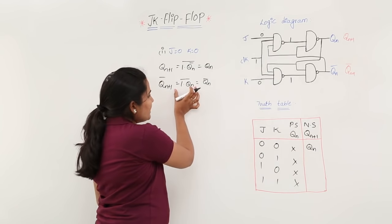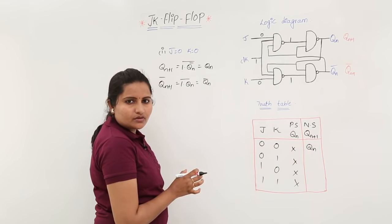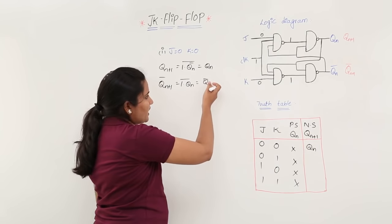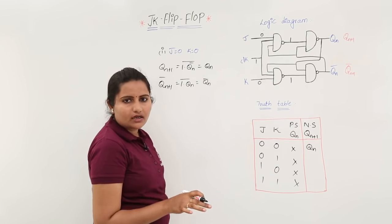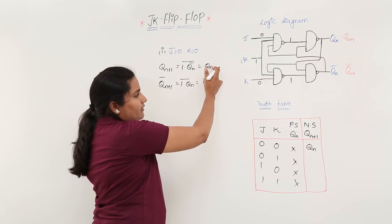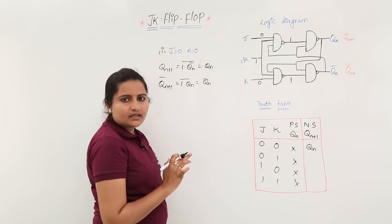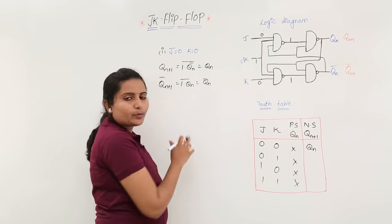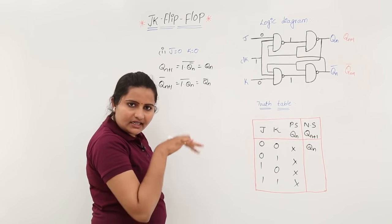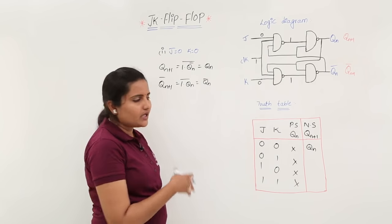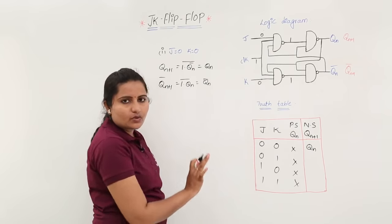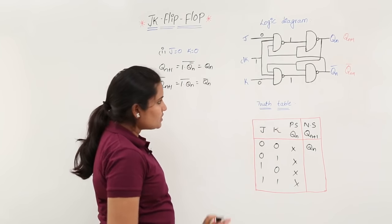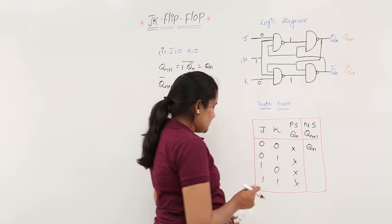We derived this to check whether we are getting any value in the complement port or not. When you are not getting a value of 0 or 1 at the normal port, you need to check the complement port for a value. Even if you are not getting a value there, you can write as-is whatever you have got.